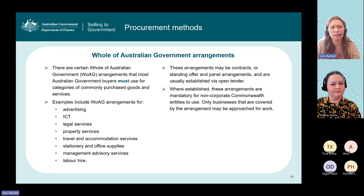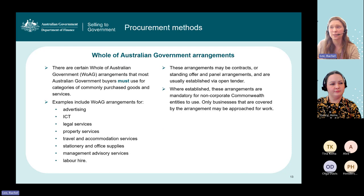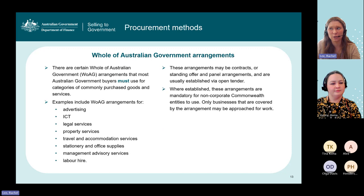There are also whole-of-Australian-Government arrangements that most Australian Government buyers must use for some categories of commonly purchased goods and services. These include arrangements for advertising, ICT, legal services, property services, travel and accommodation, stationery and office supplies, management advisory services, and labour hire. These can be contracts with specific suppliers or standing offer or panel arrangements, and are usually established by open tender. Where these arrangements have been established, they are mandatory for non-corporate Commonwealth entities to use, and only businesses covered by the arrangement may generally be approached for work.